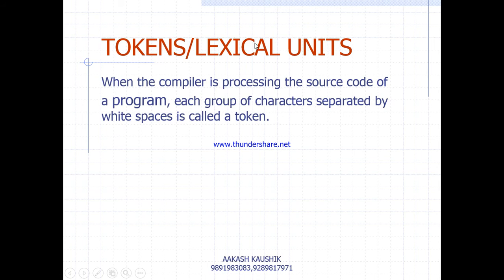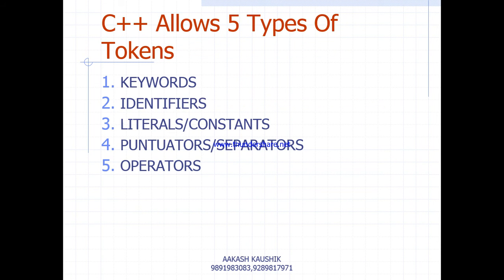Next are tokens and lexical units. When the compiler processes the source code of a program, each group of characters separated by white space is called a token — every single word of a C++ program is a token. C++ allows five types of tokens: keywords, identifiers, literals or constants, punctuators or separators, and operators.